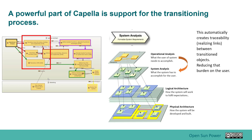This is a really powerful part of the Capella tool because it has this implemented methodology, and because it has an implemented methodology, it can actually do things for you that you typically wouldn't be able to do. We're going to be creating what they call realization links. You can see in this diagram here that you have the operational analysis, and these black dotted lines are connected to the next level of system analysis. That's essentially what gets created when you go through this transition process.